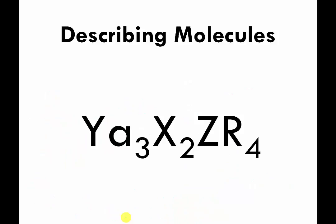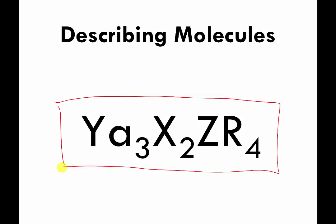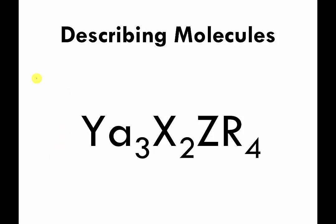Here's a different practice problem. Look at this formula for a pretend molecule — I believe all the symbols are fake. I want you to pause the video and tell me what types of atoms there are and how many of each type. This is a little tricky, so keep that in mind — you may be stumped. Go ahead and pause here.